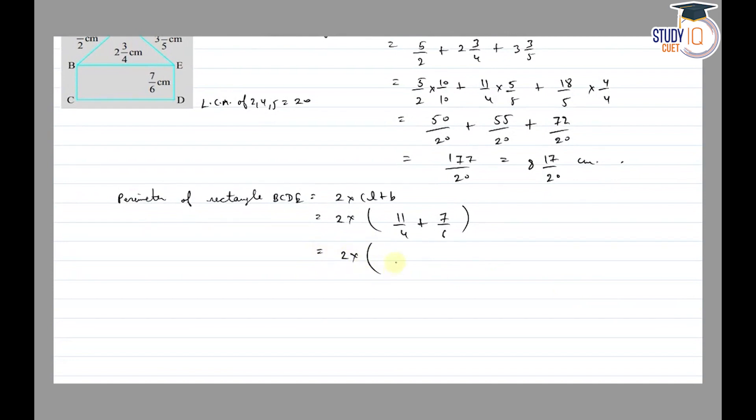2 times, firstly we will convert to like fractions. So 11 by 4 times 3 by 3 plus 7 by 6 times 2 by 2. This gives 2 times 33 by 12 plus 14 by 12. The denominator is the same, so we directly add: 33 plus 14 is 47 by 12. This will cancel with 2, giving 47 by 6.